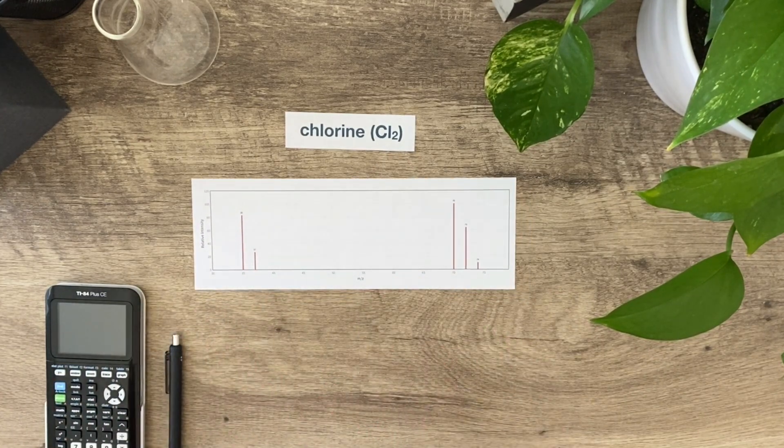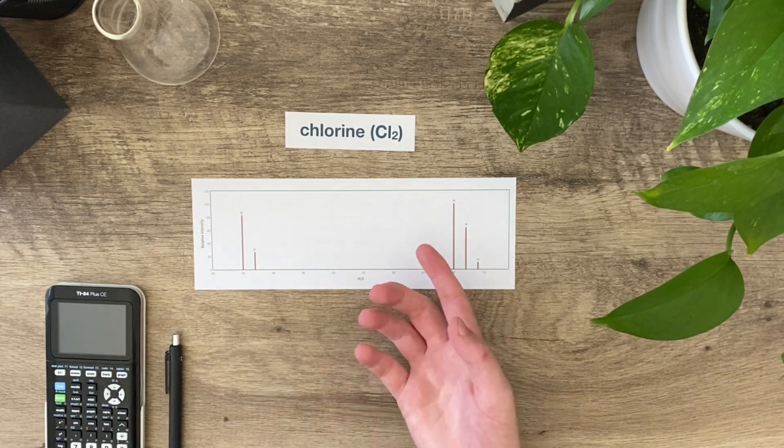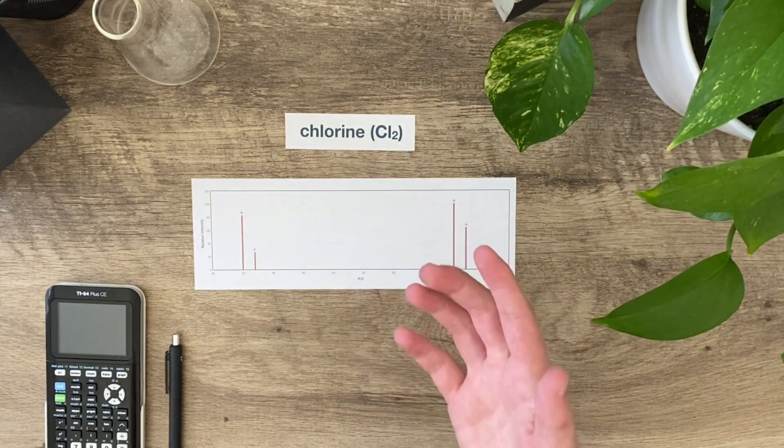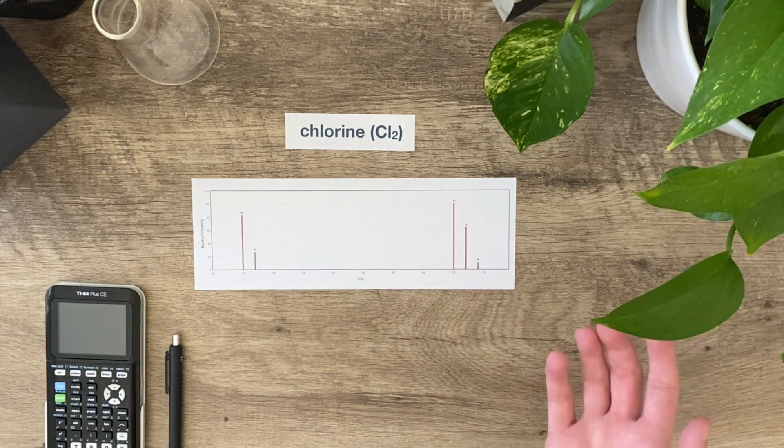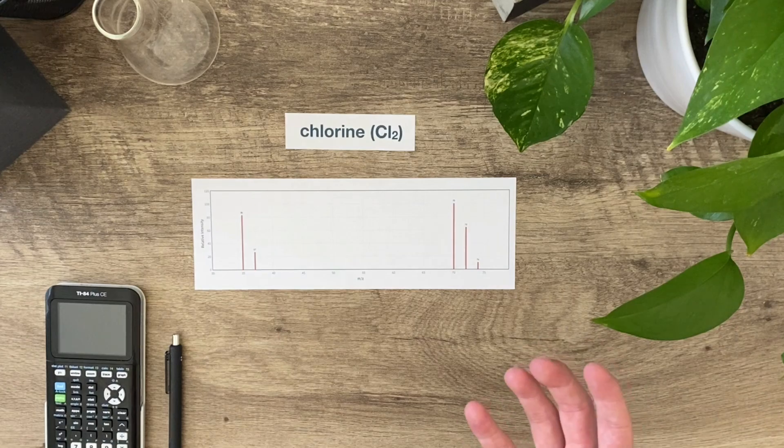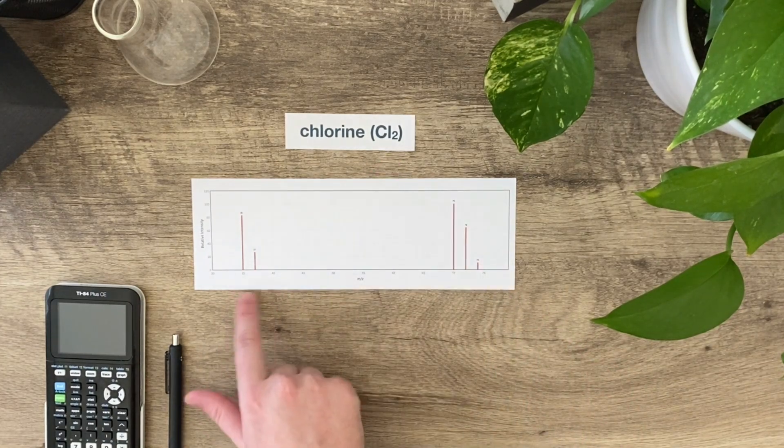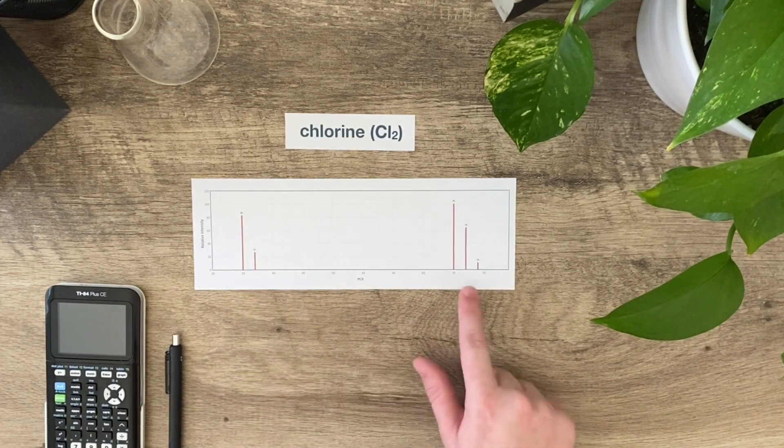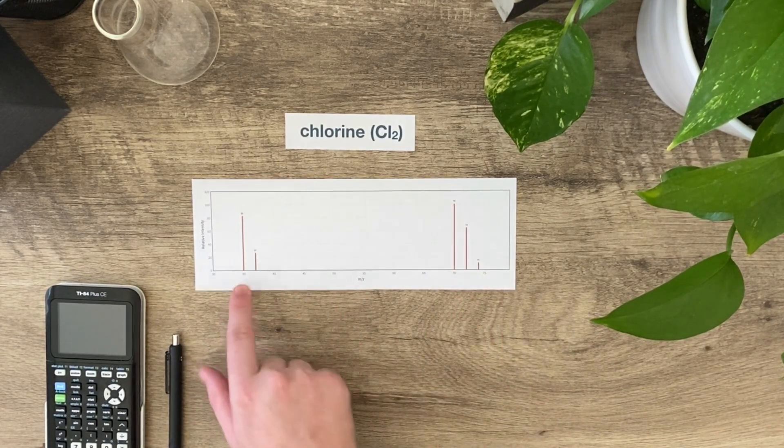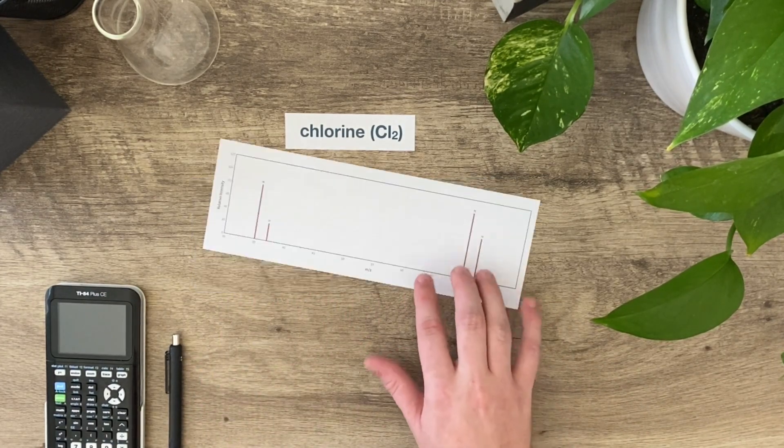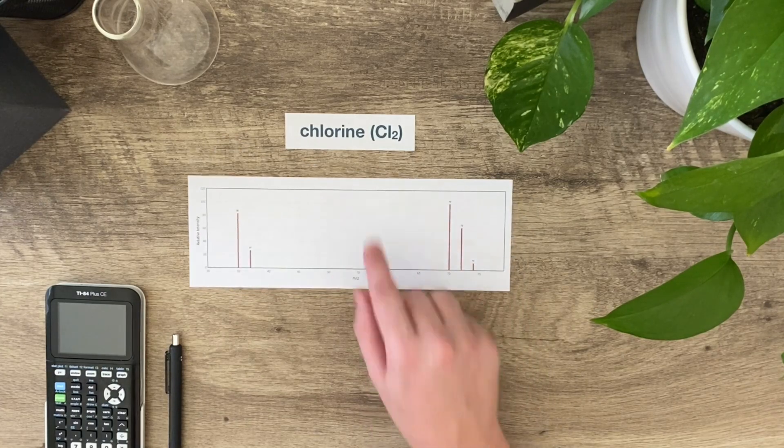This also tells you a lot more. You might ask, well okay, if the average atomic mass of chlorine is 35.5, why are there two peaks here and why are there three peaks here? Why isn't there just one peak and one peak? The reason is because of isotopes.